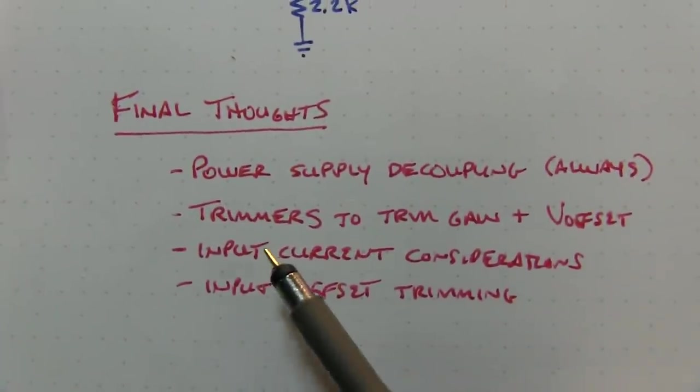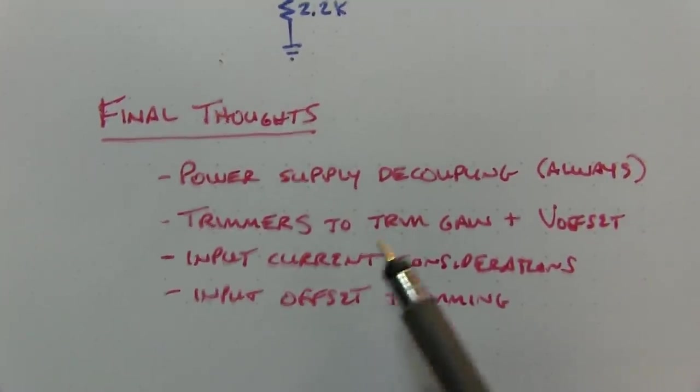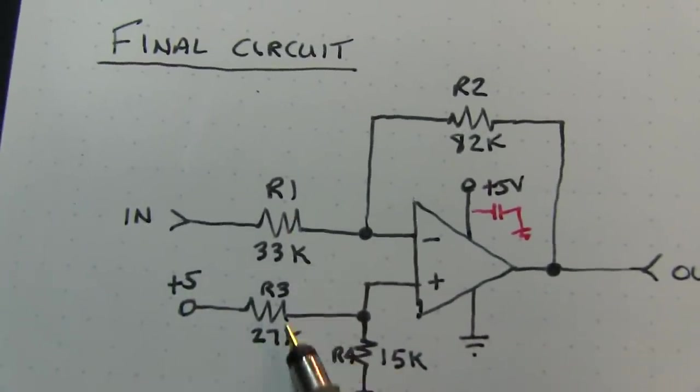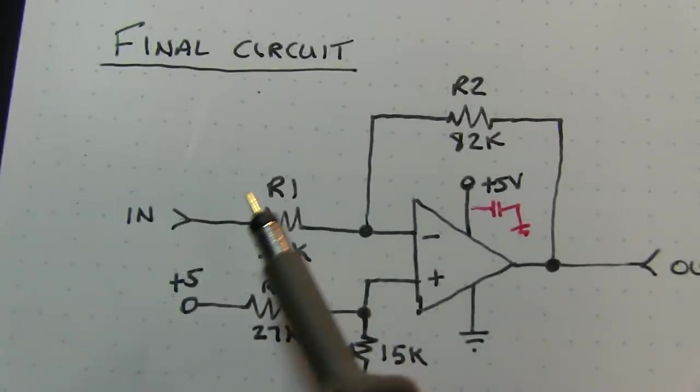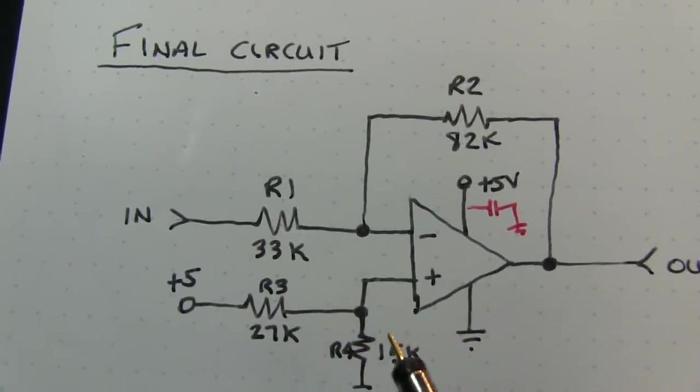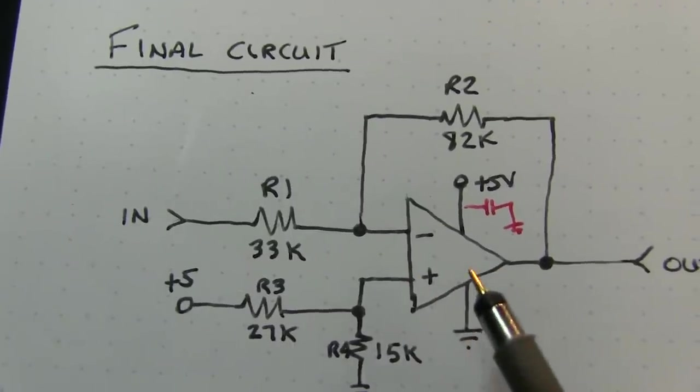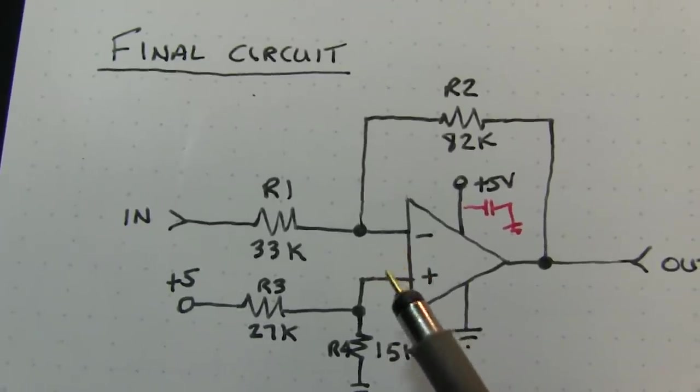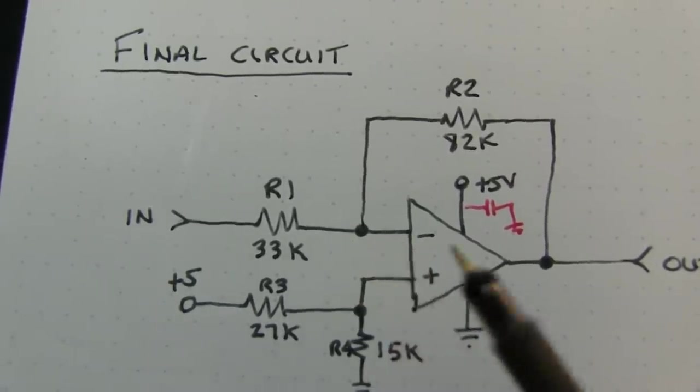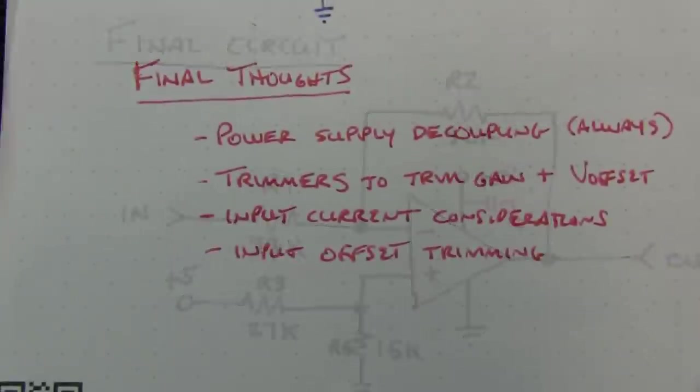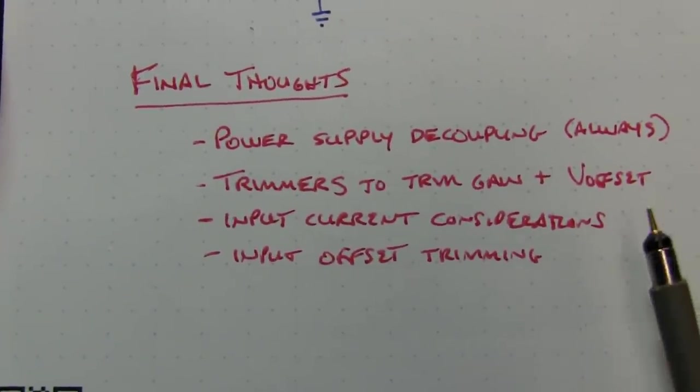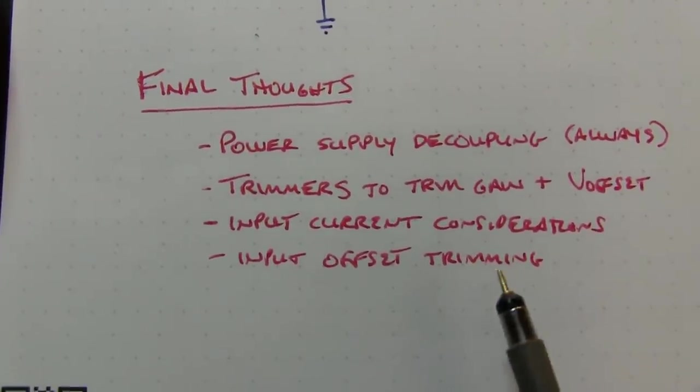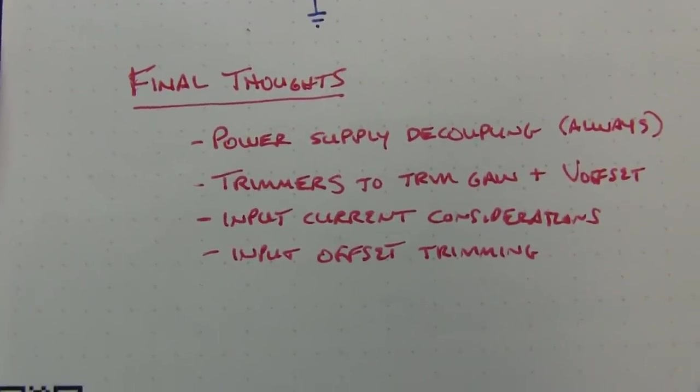In some applications, you might worry about the input current to the op amp. The input current here can cause offset voltages to appear at the resistors at the inputs. We may choose to try to match these resistors to minimize that offset value. But in the case of this MCP6002, the input currents are in picoamps, so the amount of offset due to input currents is negligible, so we don't worry about it here. Depending on how precise things need to be, you might need to add some provisions to trim out the input voltage offset of the op amp. For this application, we didn't need to do that. But these are things that you might consider in your sensor conditioning circuits.